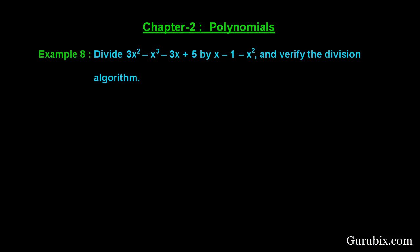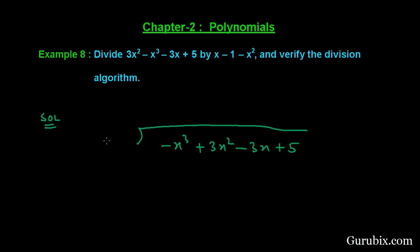This is a very interesting example. First of all, we shall write the dividend in its standard form, which will be minus x cubed plus 3x squared minus 3x plus 5. This is our dividend in its standard form. Now we shall write the divisor in its standard form, which will be minus x squared plus x minus 1.